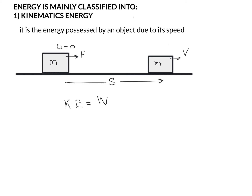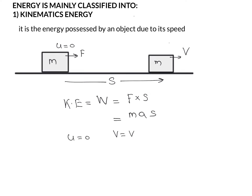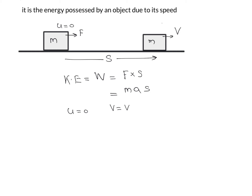For the calculation of work done, we use the equation: Work = Force × displacement, and this force can be written as mass × acceleration × displacement. The initial velocity of this object is 0 and final velocity is V. From the equations of motion, V² − U² = 2aS.